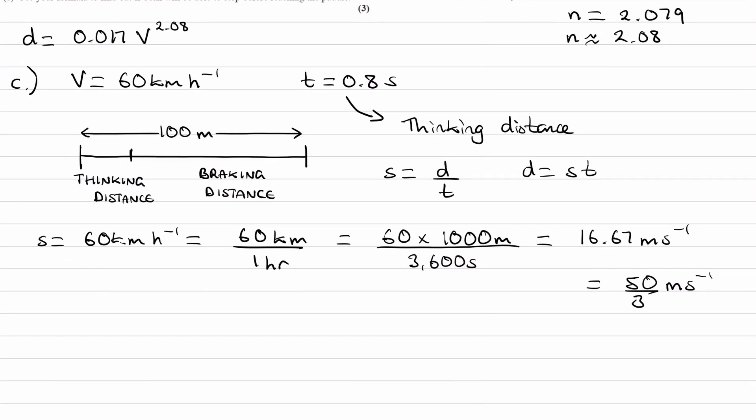And then we want to multiply that speed by the time. So we do speed times time, which is the distance. That will be 50 over 3 multiplied by the time, which is 0.8, and that gives us 13.3 recurring, which as a fraction is 40 over 3 meters.